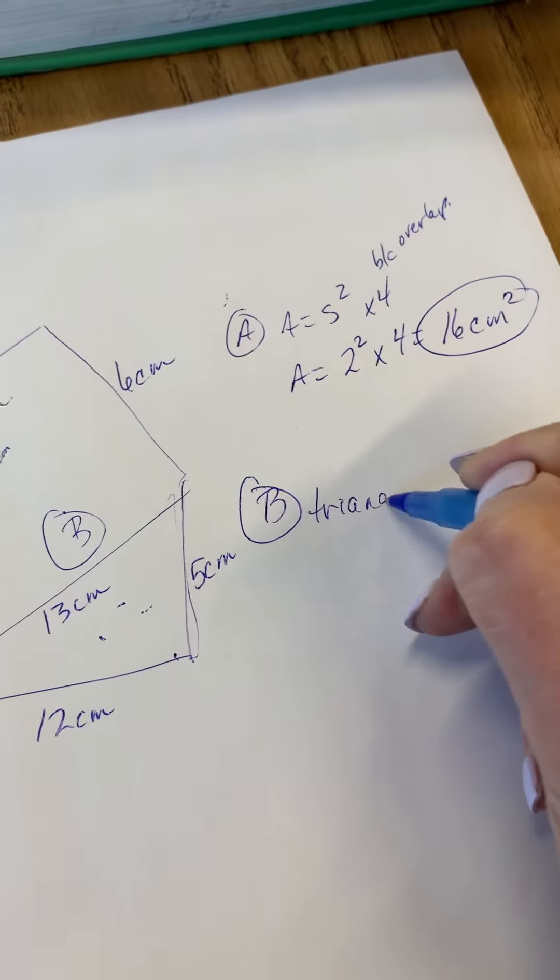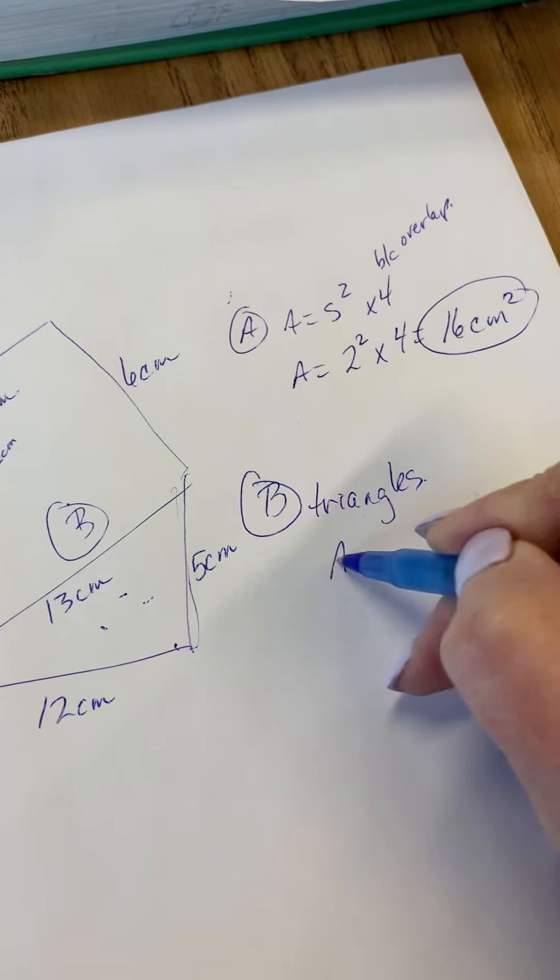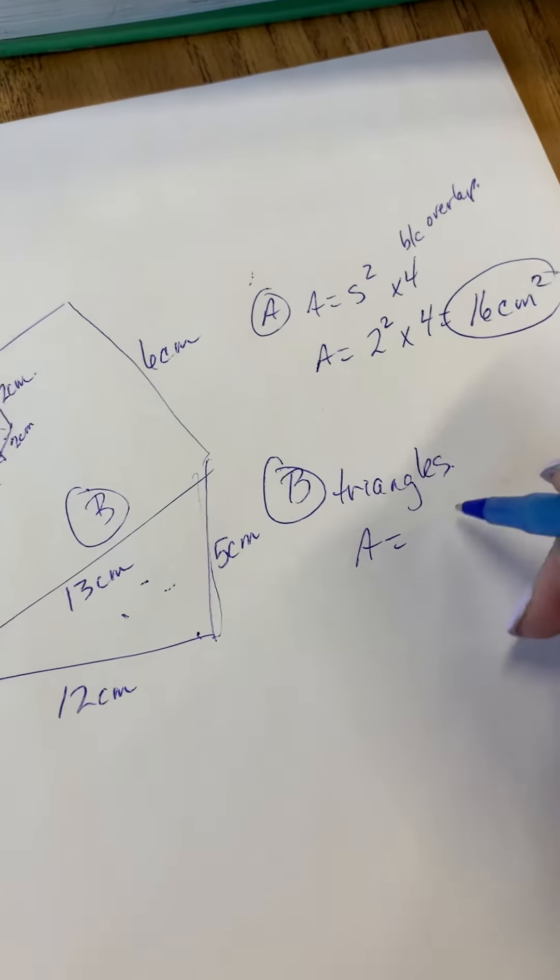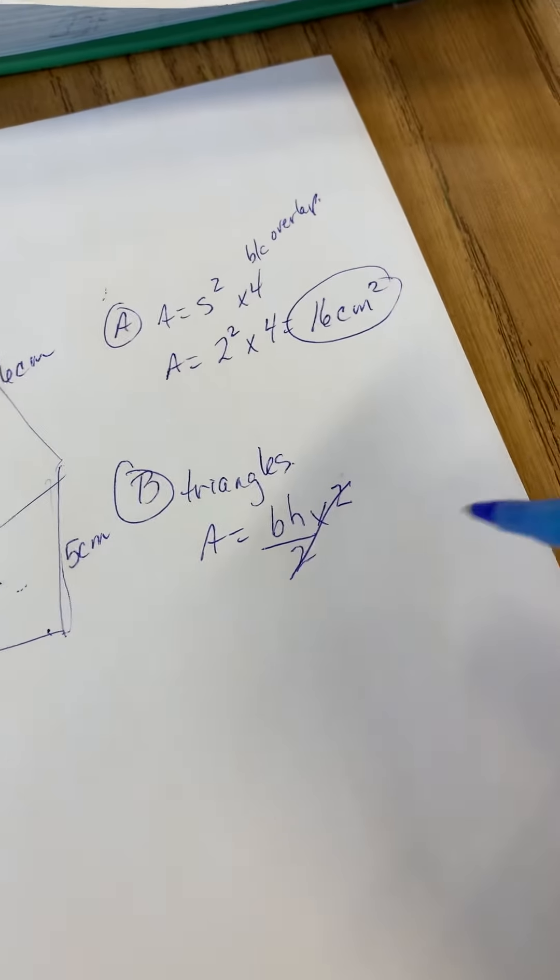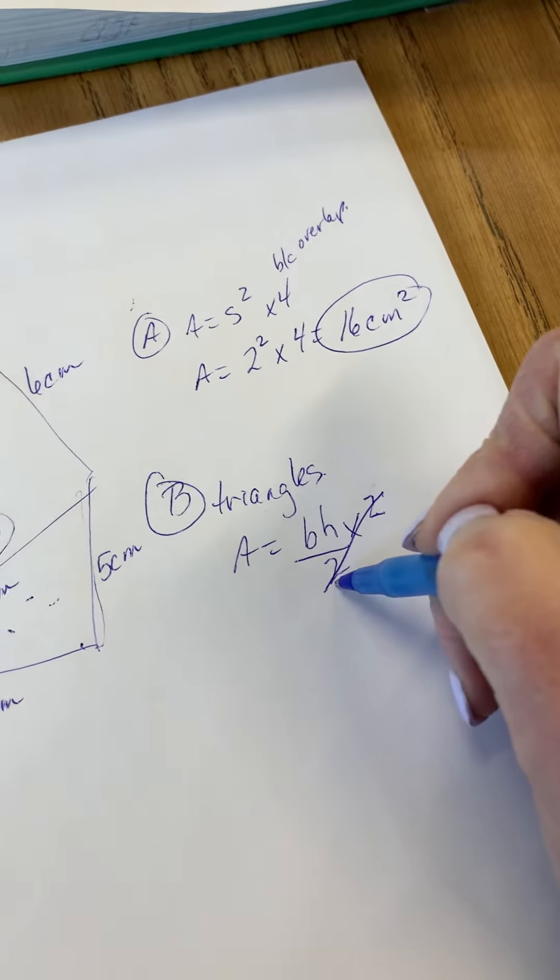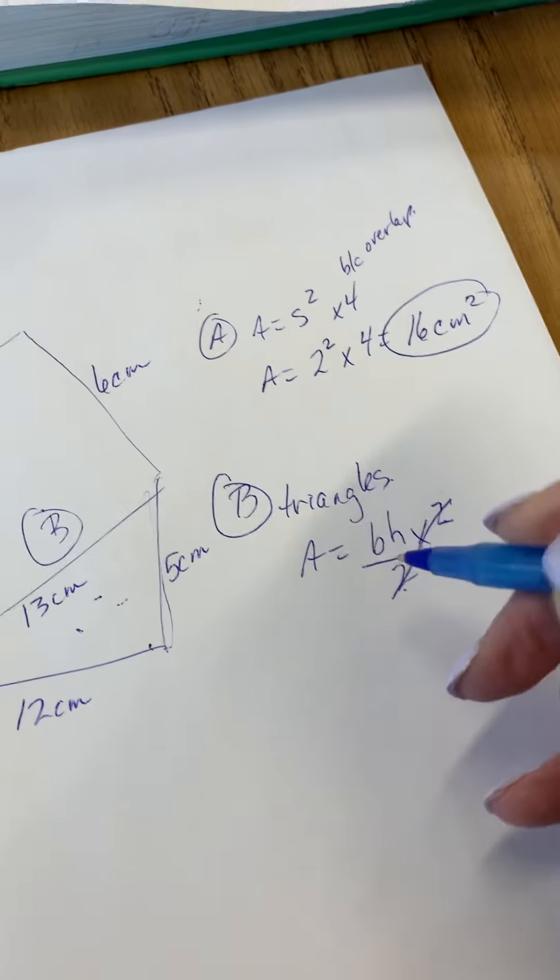So part B, I always start with my triangles. You don't have to do that, you can choose how to do this however you want. Base times height divided by 2, and there are two of them, so I eliminate that right. That's redundant. 2 divided by 2 is going to be 1, which doesn't affect.